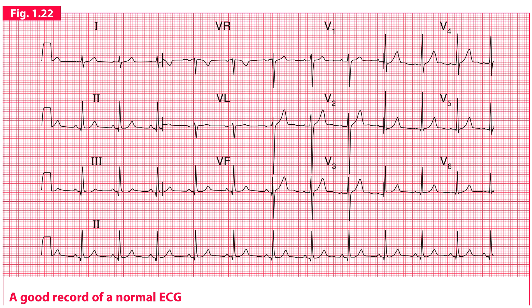This is how a normal ECG looks like. It is recorded from a normal healthy person. You can see that leads 1, 2, and 3 are present in one column.